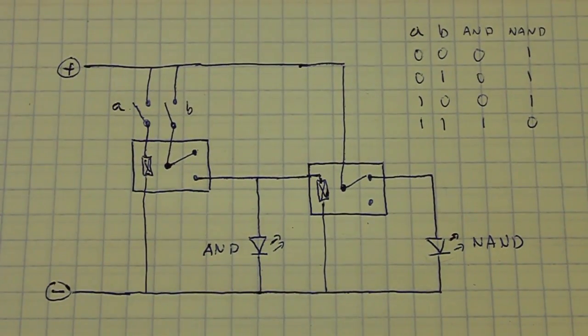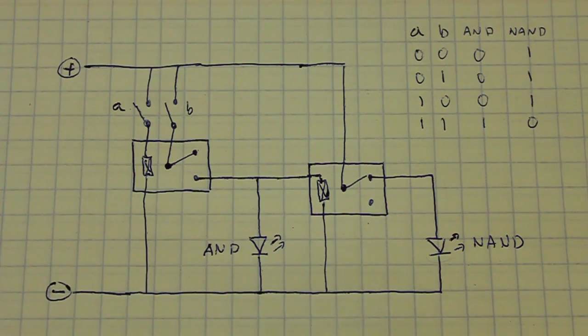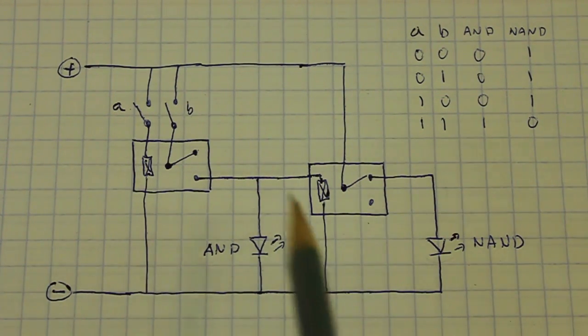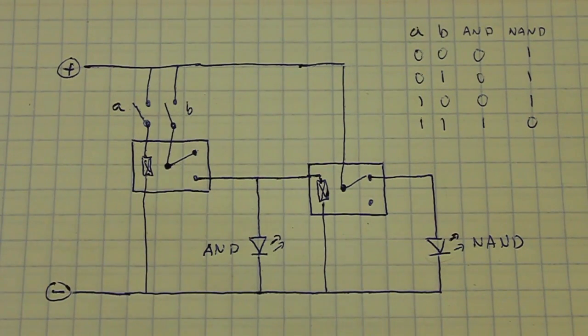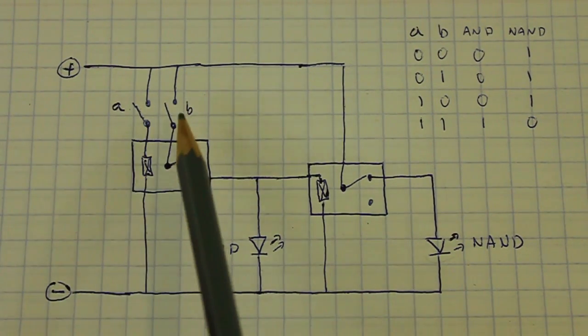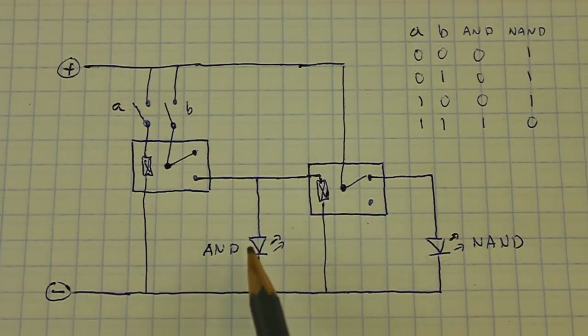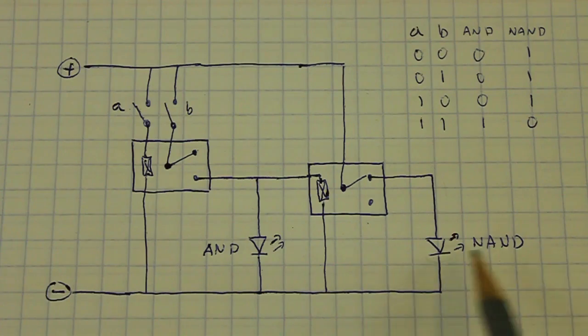This is the full circuit. We have the two relays, the two switches which represent the inputs, switch A and switch B, and the two LEDs which represent the outputs AND and NAND.